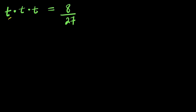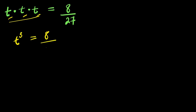Hello. How to solve t times t times t equals 8 divided by 27. We are solving for all values of t that satisfy this equation.